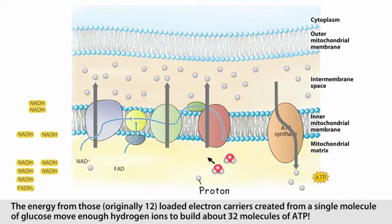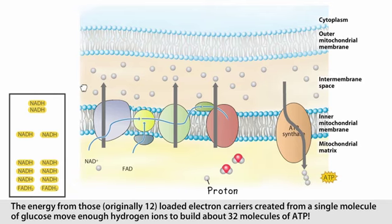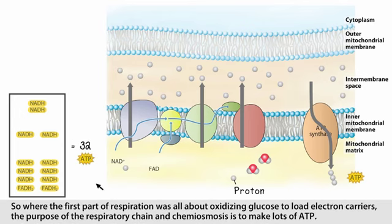The energy from those originally 12 loaded electron carriers, created from a single molecule of glucose, move enough hydrogen ions to build about 32 molecules of ATP. So where the first part of respiration was all about oxidizing glucose to load electron carriers, the purpose of the respiratory chain and chemiosmosis is to make lots of ATP.